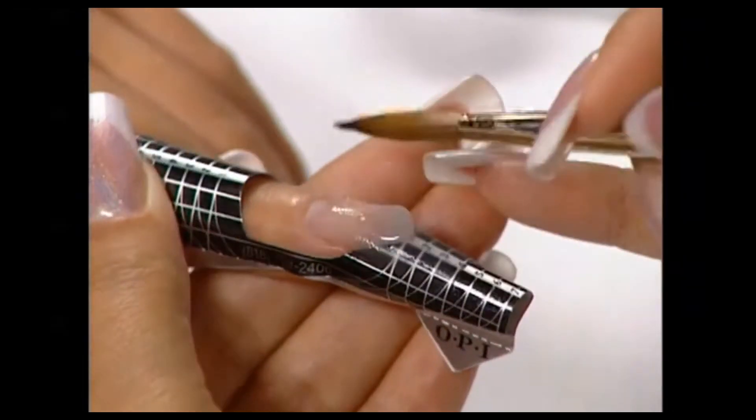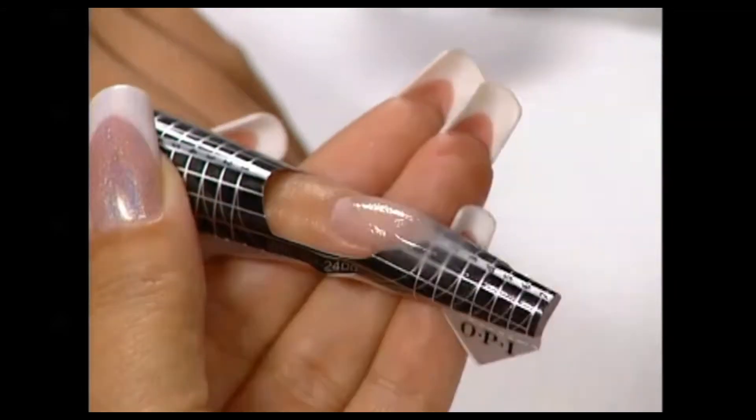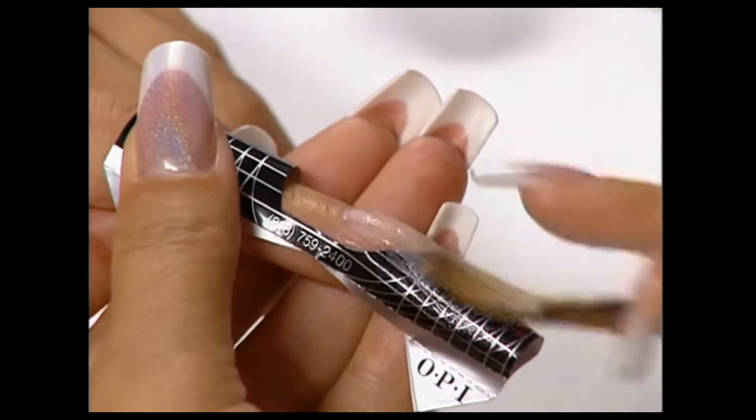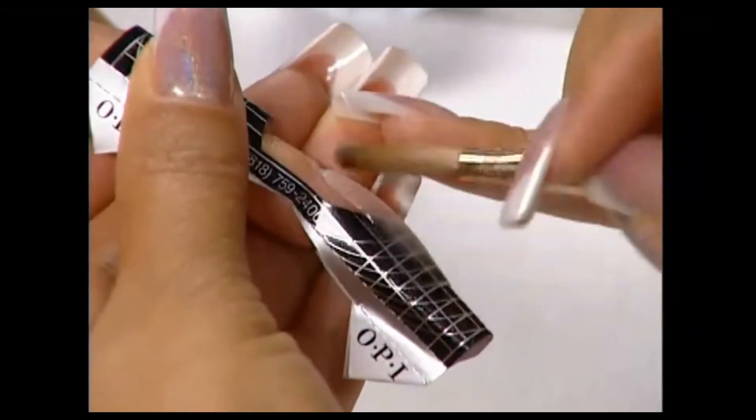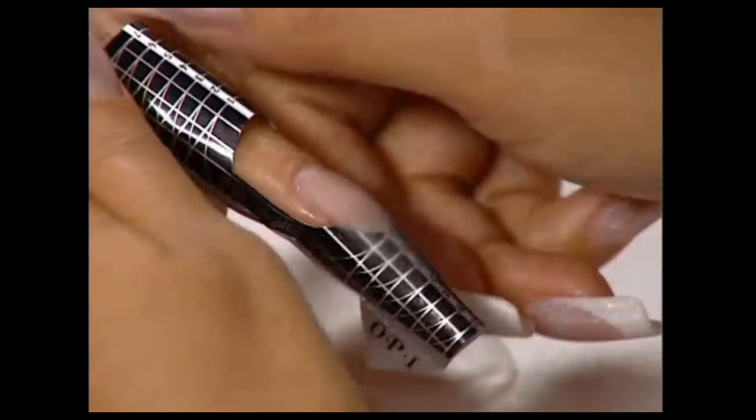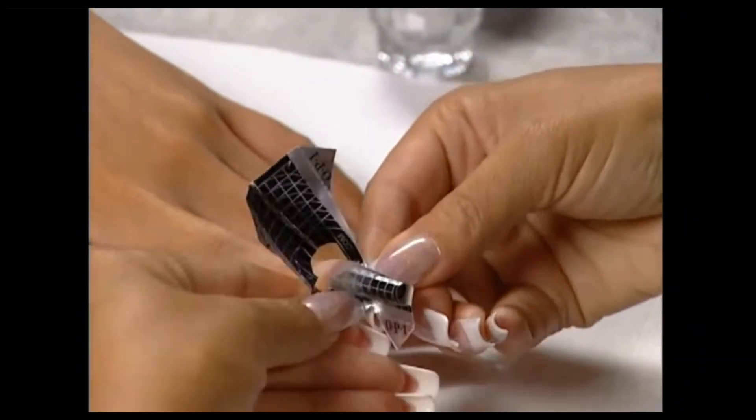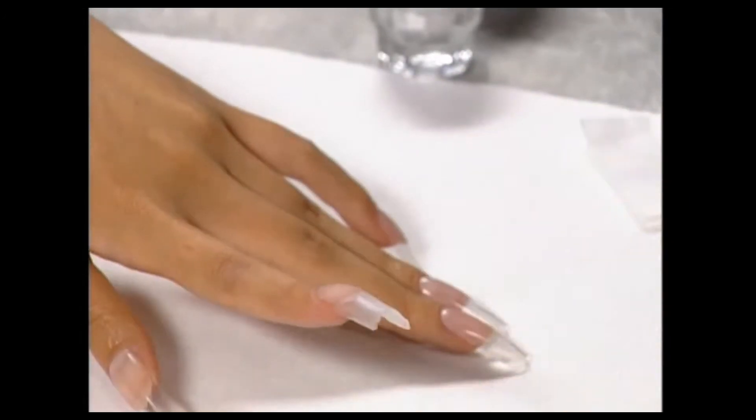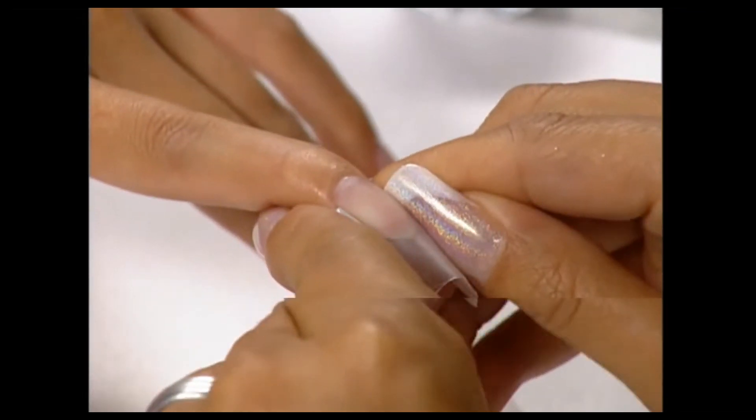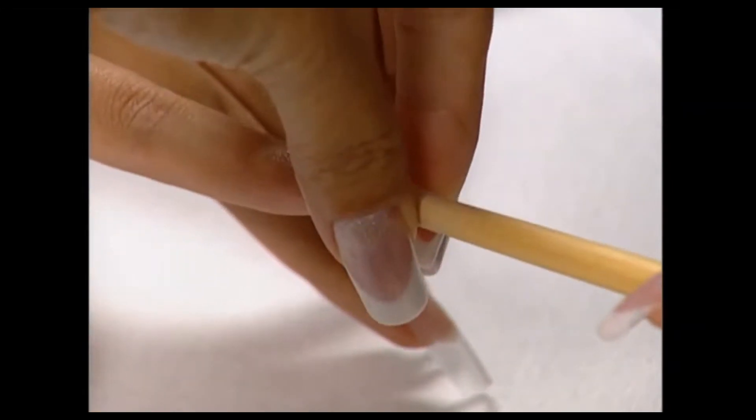A final bead fills in the stress area at the smile line and builds the arch. Allow the product to cure until it is still flexible and remove the form. Pinch in the C-curve at the wide area at the stress line as the product continues to cure. You can also use the end of the brush to contour the C-curve.